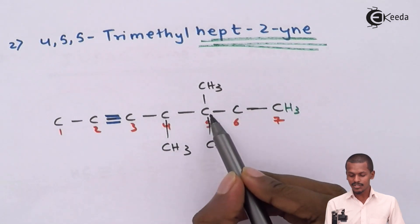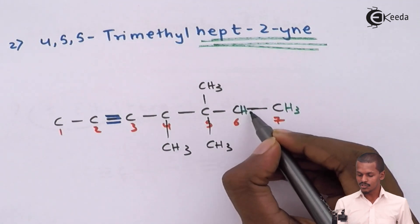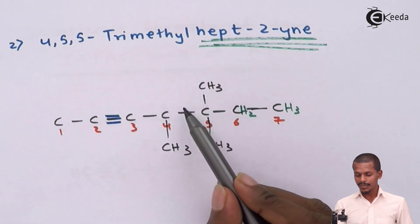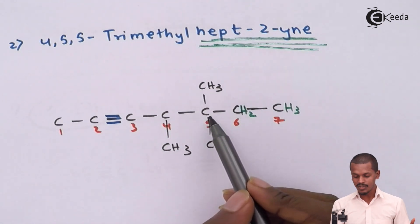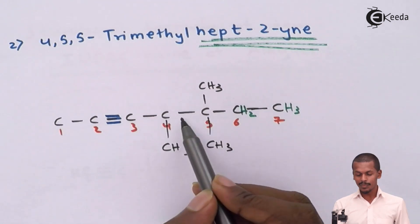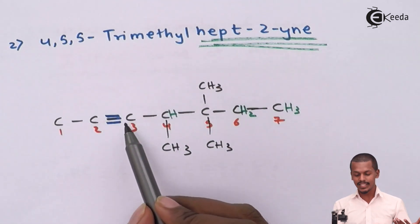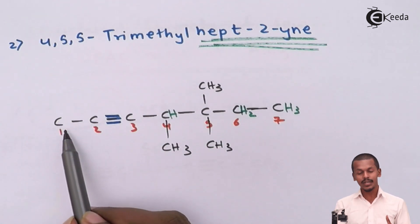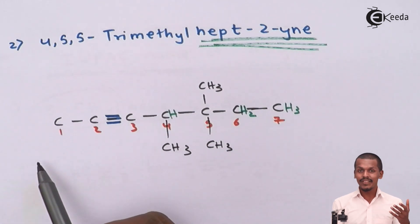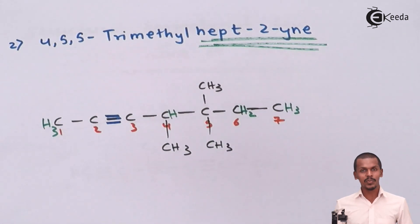We now fulfill the valencies of all carbon atoms with hydrogen. The terminal carbon on carbon 1 forms only one bond, so it is CH3. The next carbon forms 2 bonds, so it is CH2. The carbon at position 3, which is part of the triple bond, already satisfies 4 bonds so no hydrogen is needed. Carbon 4 forms 3 bonds so it gets one H. Carbon 5 with two methyl groups satisfies 4 bonds with no H needed. The final terminal carbon forms only one bond, so it gets 3 hydrogens — CH3. This is the complete structure of 4,5,5-trimethyl-hept-2-yne.